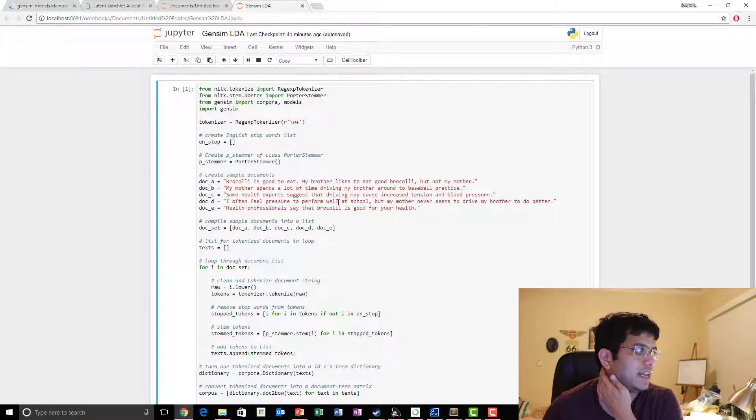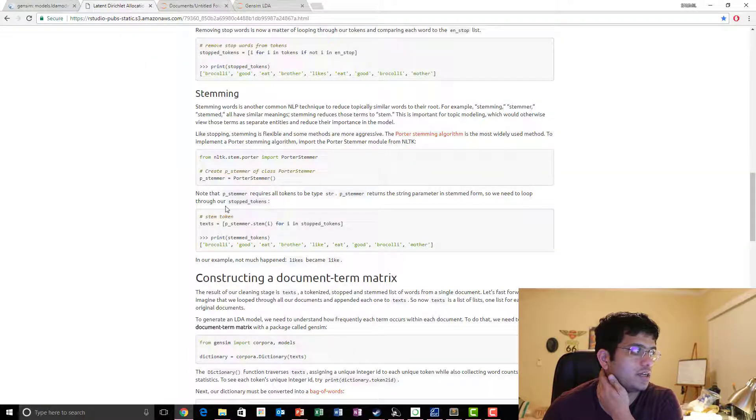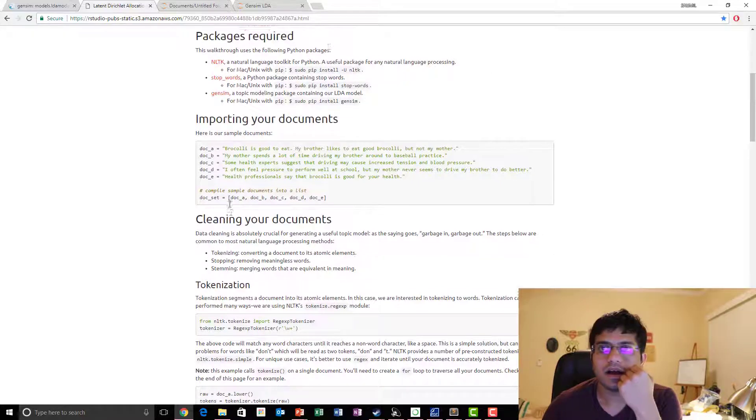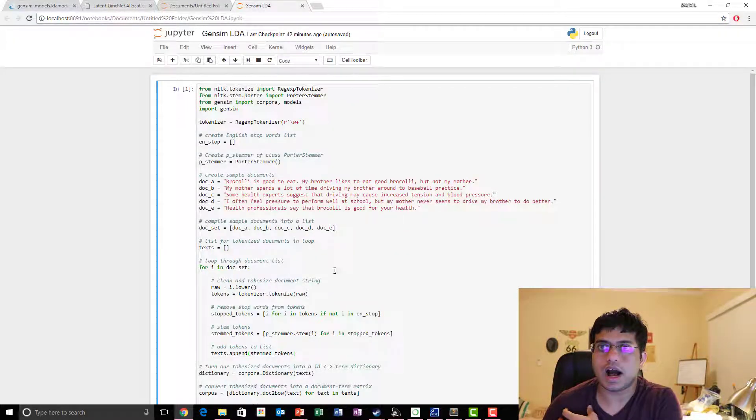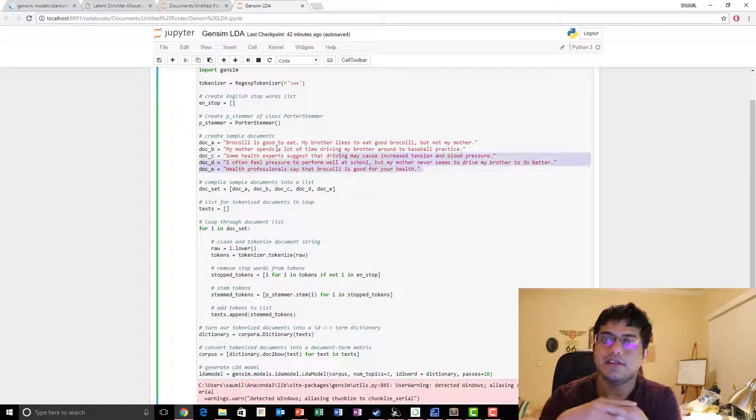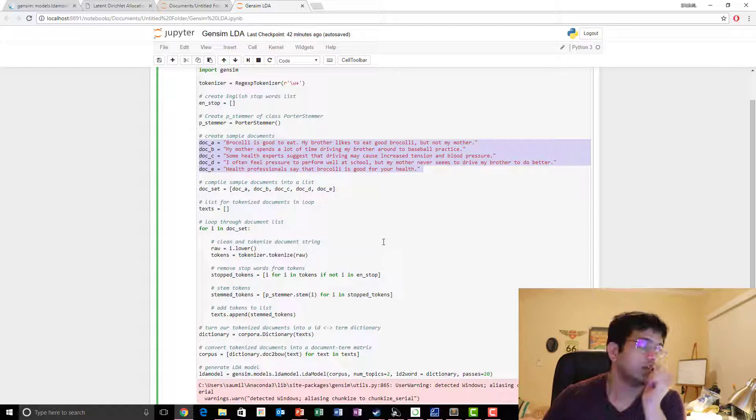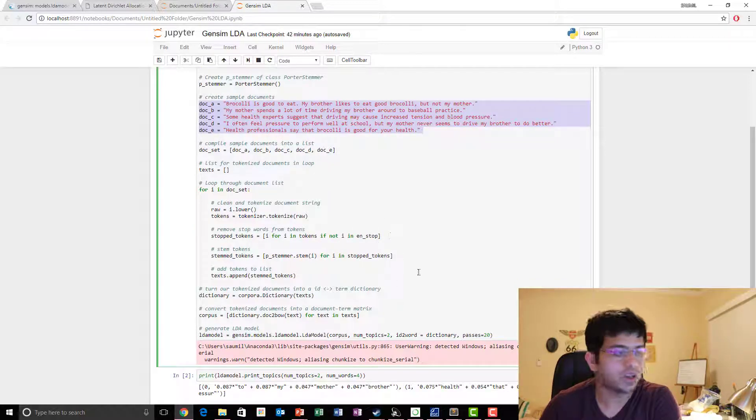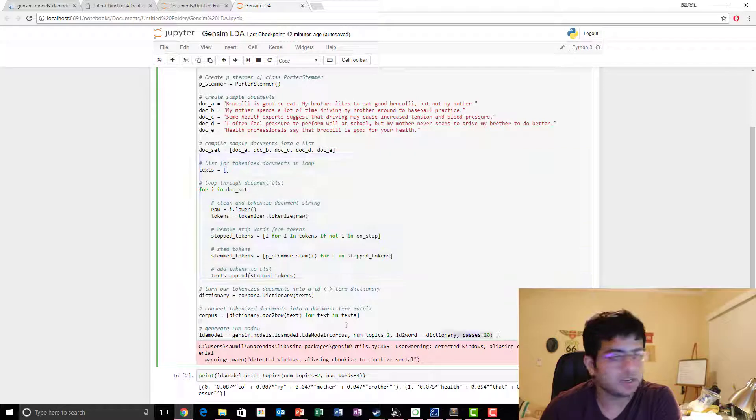What we basically do is we have got different documents and now we want to know how we can infer topics from these documents. We preprocess all the documents and then we feed it to our GenSim LDA model which is already trained. Once we feed it to our model and run it through...